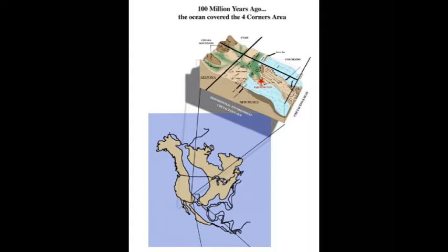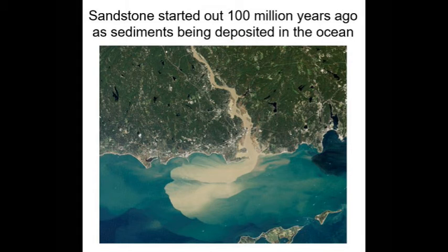It all started 100 million years ago during the Cretaceous era. At that time, global temperatures were much hotter, sea levels were much higher, and an inland sea stretched across central North America all the way from the Gulf of Mexico through Canada. The San Juan Basin was on the edge of the ocean, where sediment-laden rivers fed into the sea from the highlands to the west.